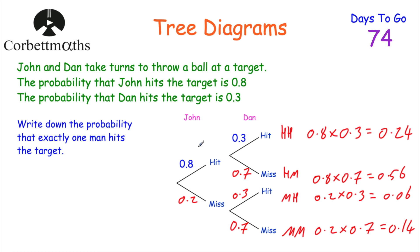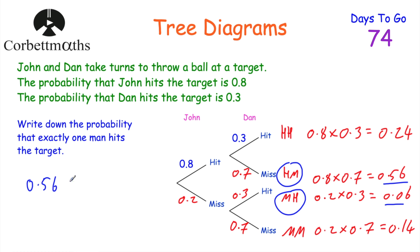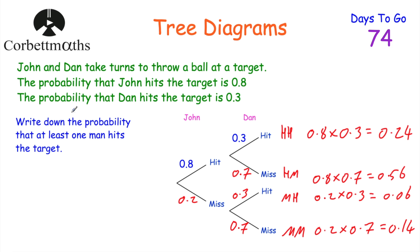Next, we've been asked to find the probability that exactly one man hits the target. That means either John hits and Dan misses, or John misses and Dan hits. When we want either one outcome or another, we add those probabilities together: 0.56 + 0.06 = 0.62. So the probability that exactly one man hits the target is 0.62.